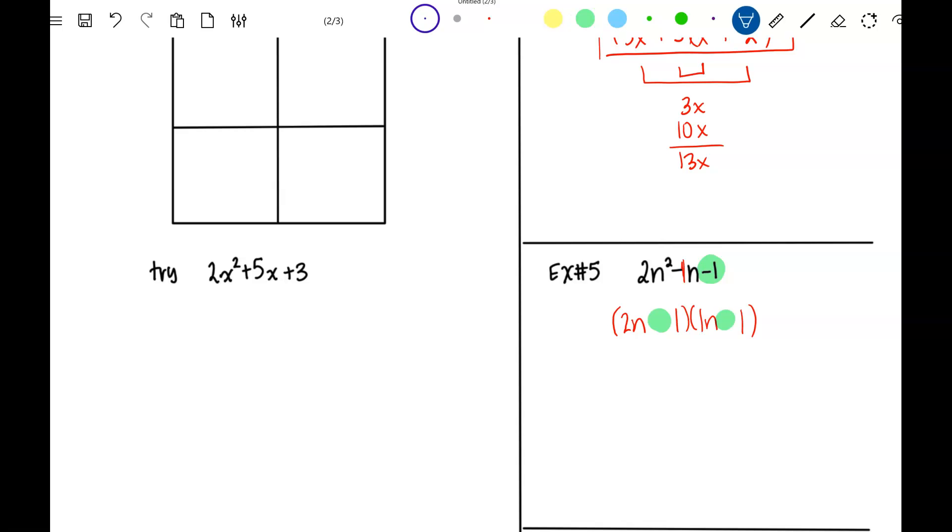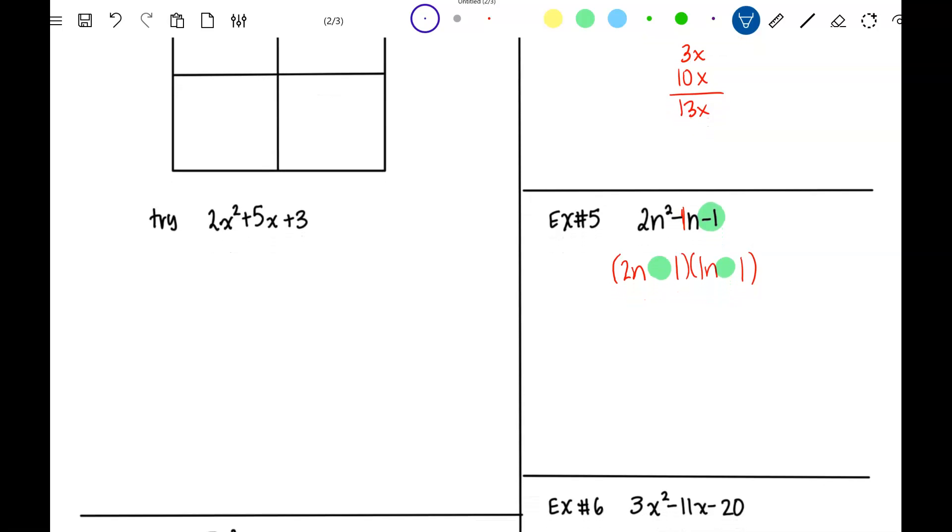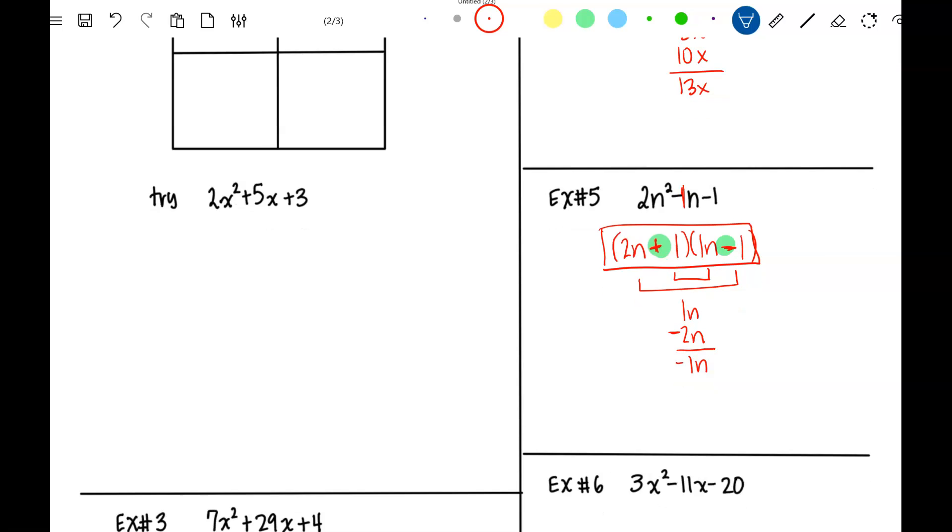In order to get a negative 1, then my product, the bigger product, has to be negative. So when I check inside product and outside product, the bigger product has to be negative because that's what the middle term is. In order to get that 2n to be negative, I have to put my negative sign right there, which means the other one has to be positive. And that's my answer.